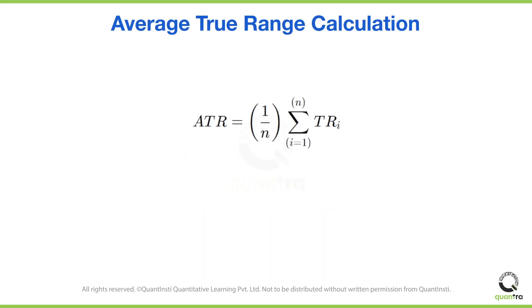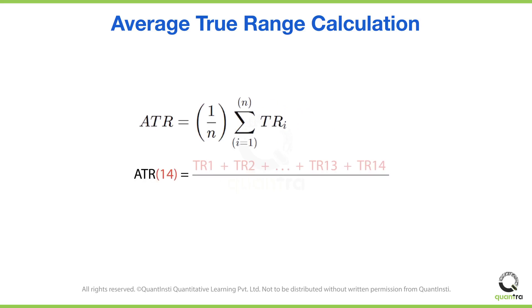And lastly, we saw how to calculate the ATR value for a given period of days. For example, if we were to calculate the 14-day ATR, we would simply add up all the true range values of the past 14 days and then divide the total by 14, which is the total number of days. That was all for this video.